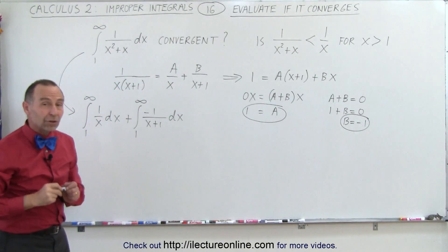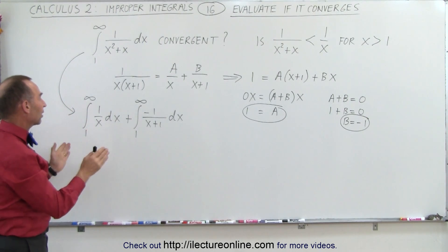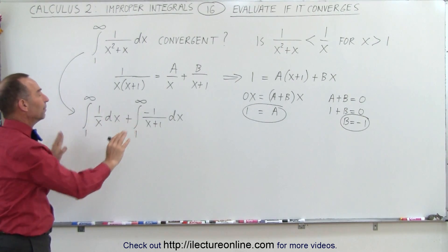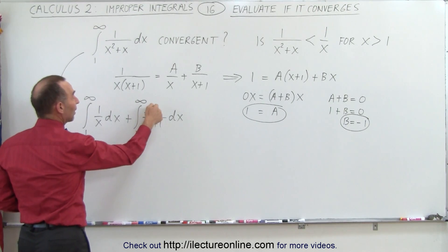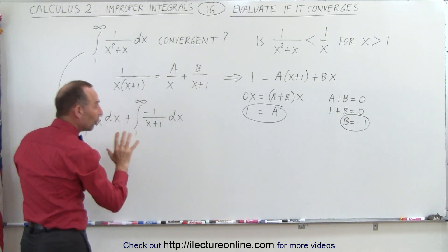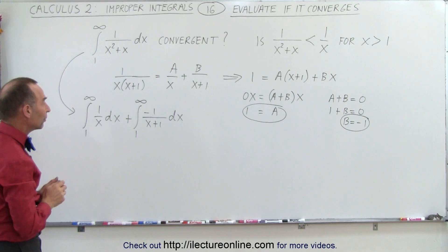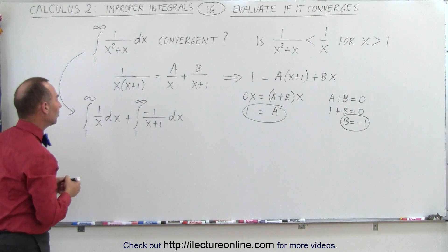Now at first glimpse, you look at this and go, wait a minute, I know this integral. This does not converge, so therefore I am done. But not so quick, because we have a negative sign here and we have 1 over x plus 1. So maybe the portions that diverge will cancel out. That's the suspicion here. Let's take a look.